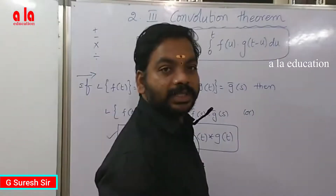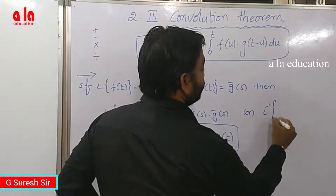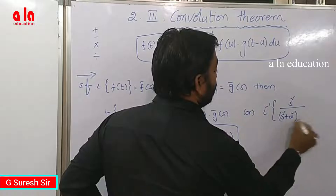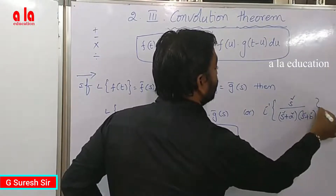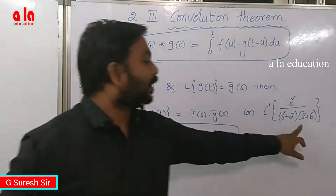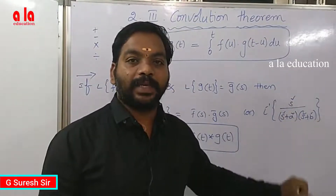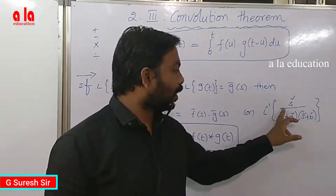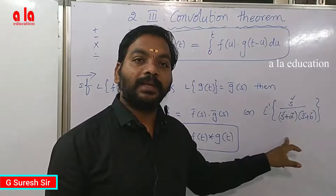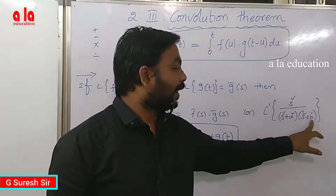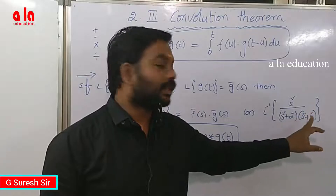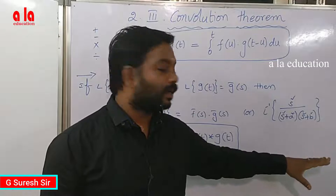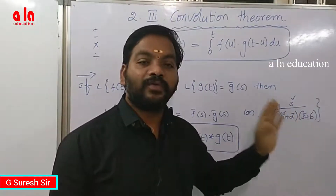Instead of using partial fractions to solve the problem, we can use convolution. For example: s squared divided by (s squared plus a squared)(s squared plus b squared). If we apply partial fractions, the denominator is the product and we would need constants A, B, C, D with terms like (As plus B) and (Cs plus D).